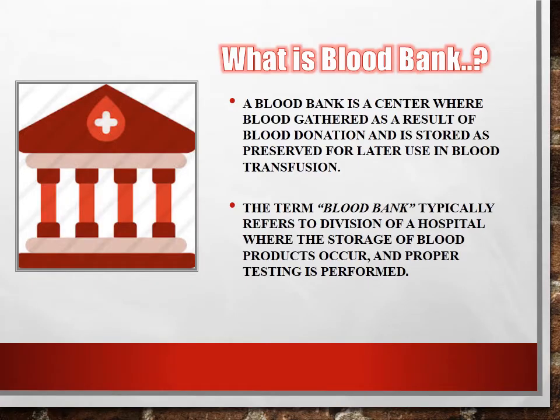What is a blood bank and what are the functions of a blood bank? The blood bank is a place where blood is collected from a donor, separated into components, stored, and prepared for transfusion to recipients. A blood bank is a separate freestanding facility or part of a larger laboratory in a hospital. It is a center where blood is gathered as a result of blood donation and stored and preserved for later use in blood transfusion. The term blood bank typically refers to a division of a hospital where the storage of blood products occurs and proper testing is performed.